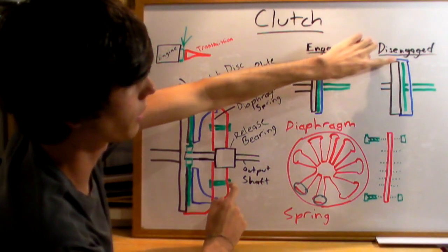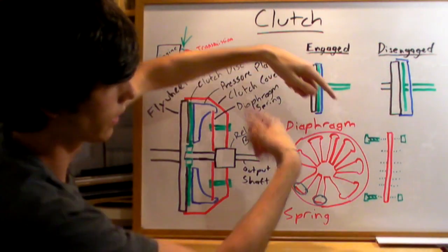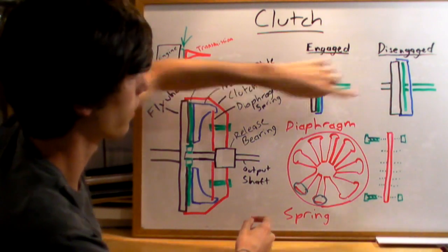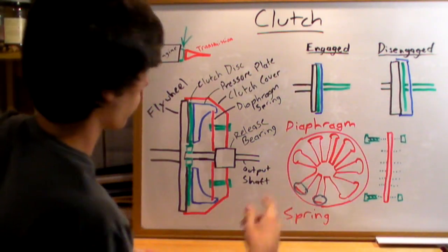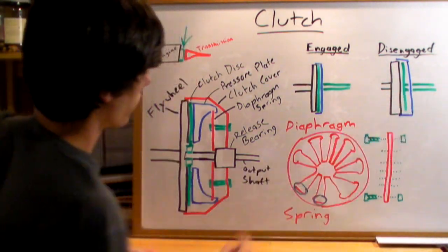The clutch is going to be free to spin just in the air, and so that's what's going to be connected to your wheels. That green there is that output shaft.